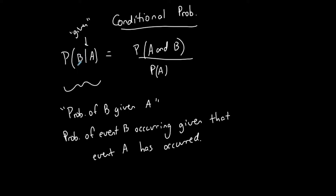The event before the line is the event occurring after. This means the denominator is always affected by the event that has already occurred. The numerator is the probability of both occurring — the intersection over the probability of what has already occurred.